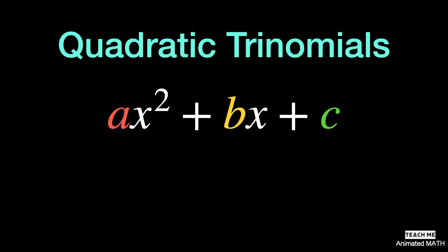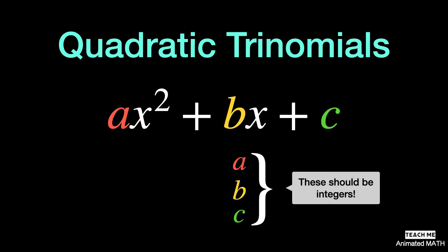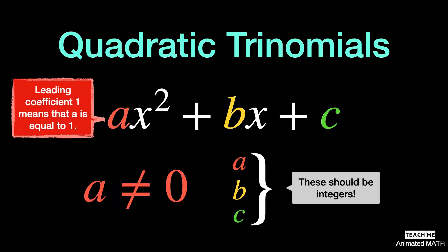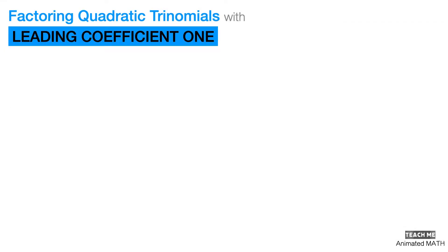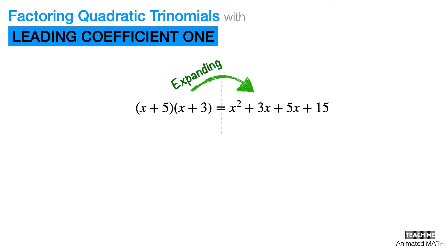Quadratic trinomials follow the form ax² plus bx plus c, where the coefficients a, b, and c are integers with the restriction that a cannot be equal to 0. When a trinomial has a leading coefficient 1, it means that a is equal to 1. To understand the basics for factoring quadratic trinomials, first consider this example of multiplying two binomials.